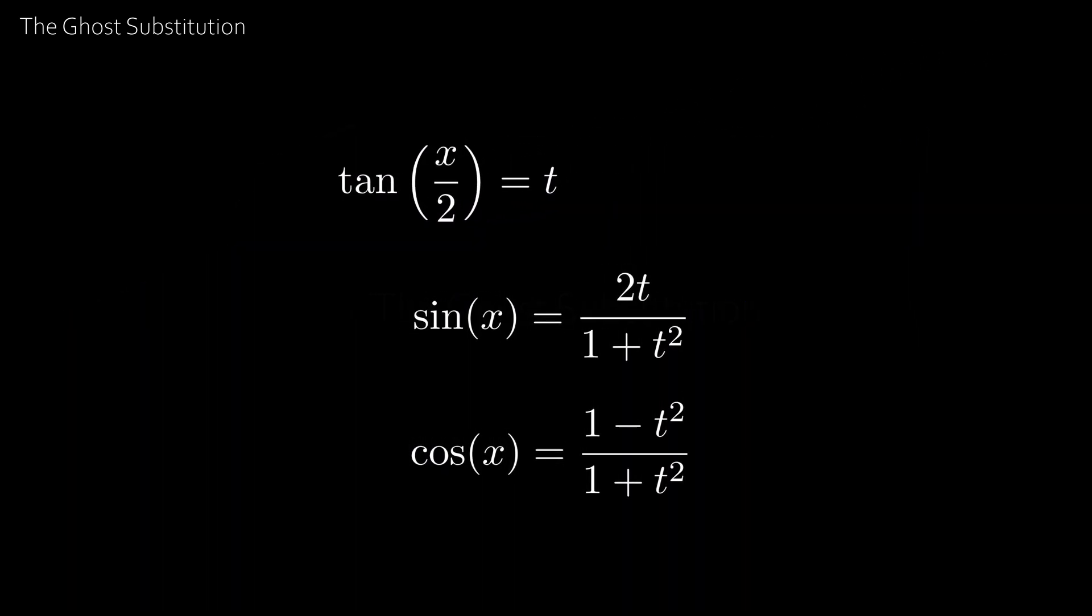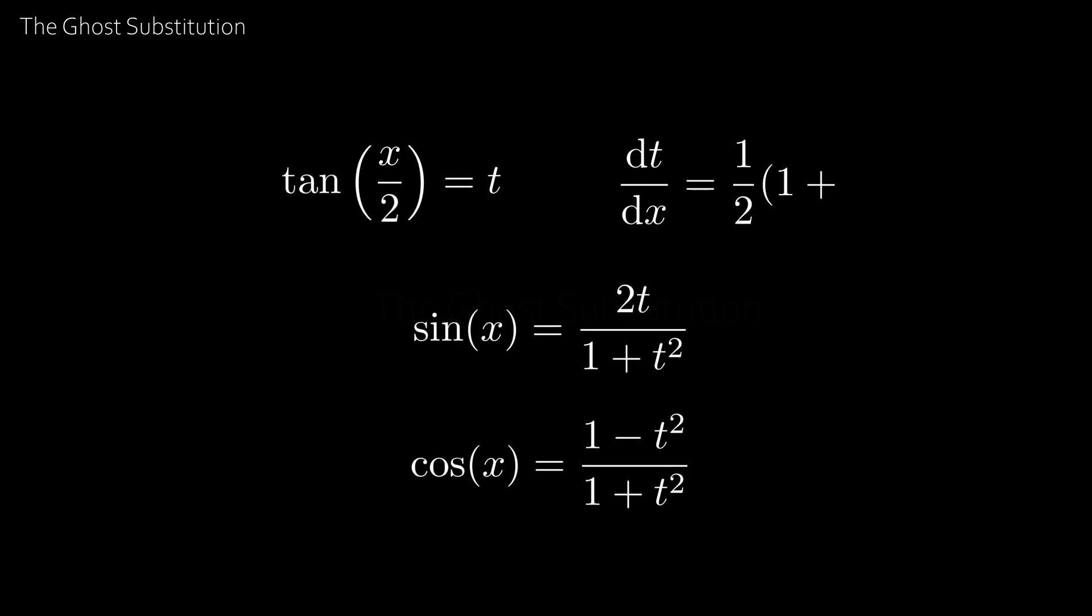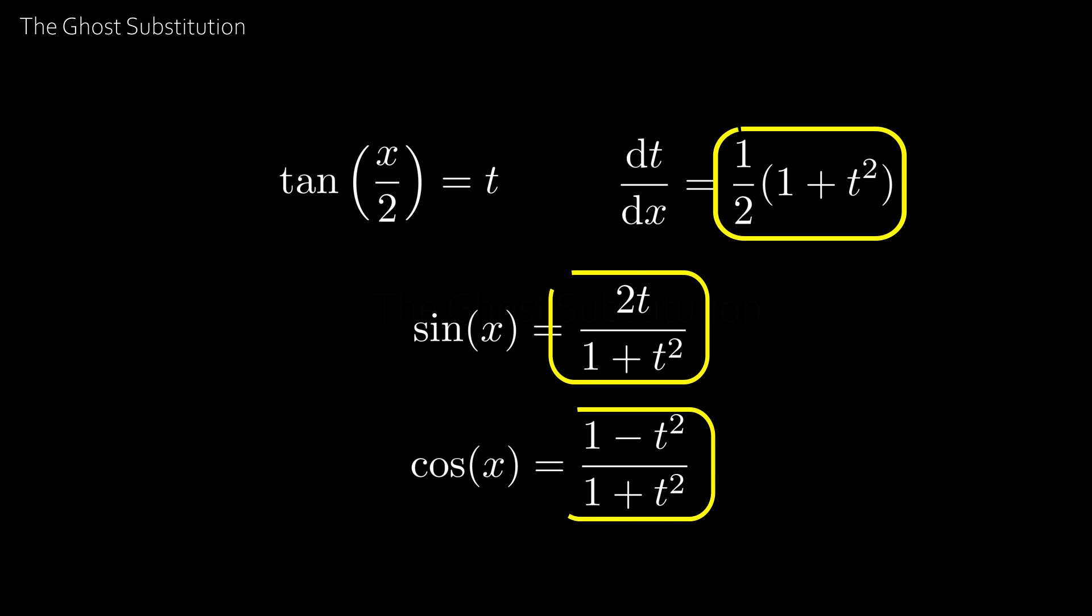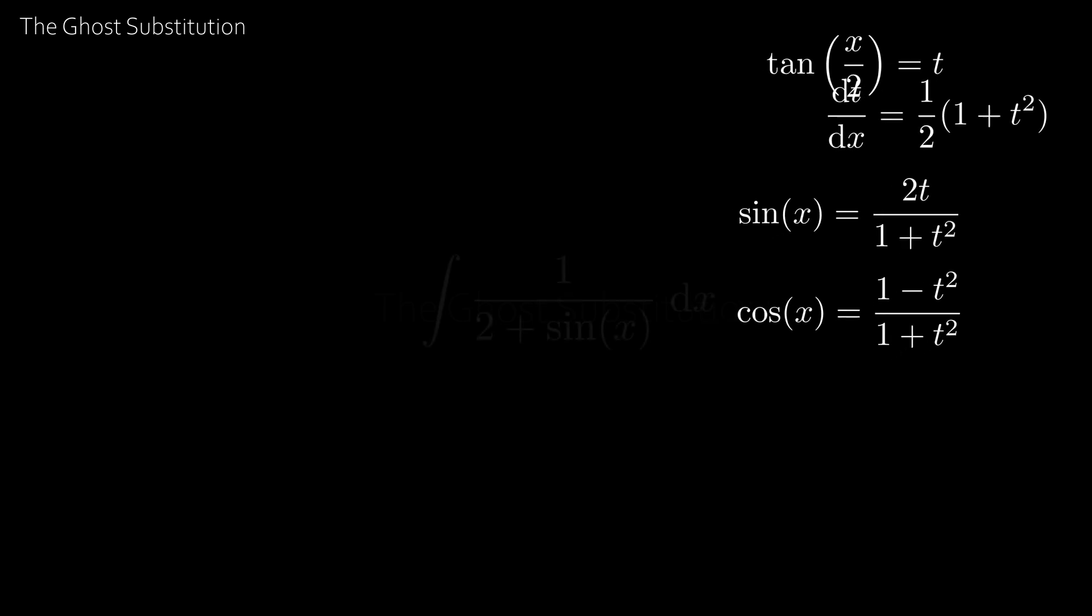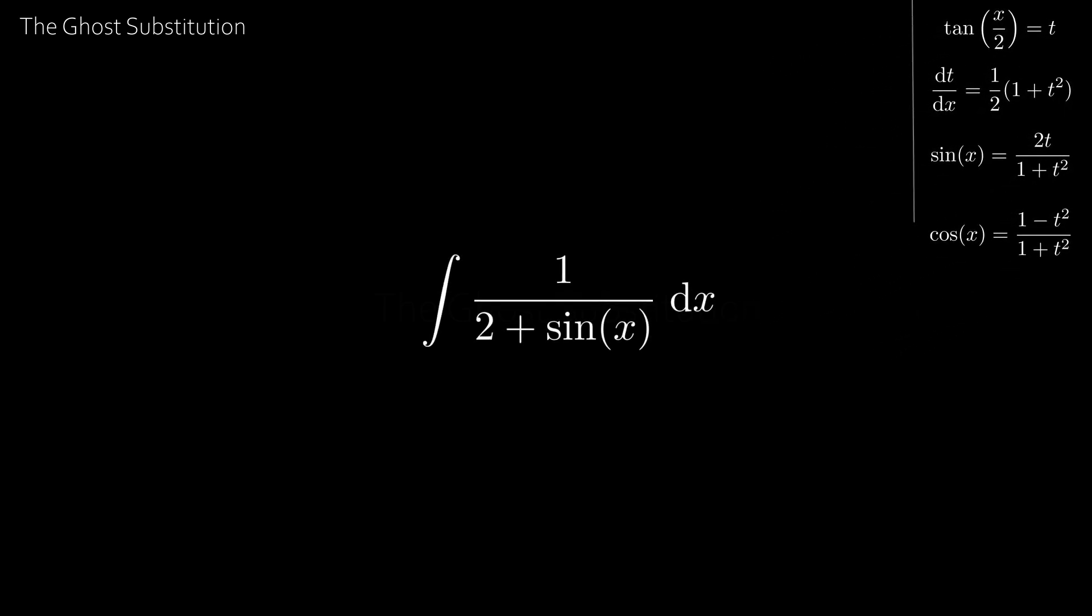Now we also note that the derivative can also be written in terms of t, leaving us with everything being in terms of t. Now all we've actually done is converted our original function substitution into a rational function with lots of cancellation included. So let's go back to our original integral and if we make the ghost substitution, we get this.